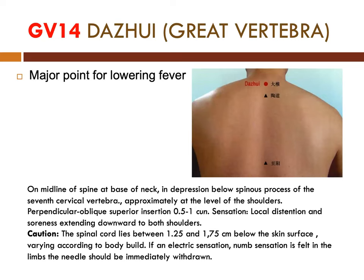For the points used for clearing, number one is GV or DU-14, the great vertebra. This point is a major point for lowering fever. It is located on the midline of the spine at the base of the neck, in the depression below the spinous process of the seventh cervical vertebra, approximately at the level of the shoulders. It is needled perpendicularly or obliquely with superior insertion, 0.5 to 1 cun. We expect a sensation of local distension and soreness extending downward to both shoulders.